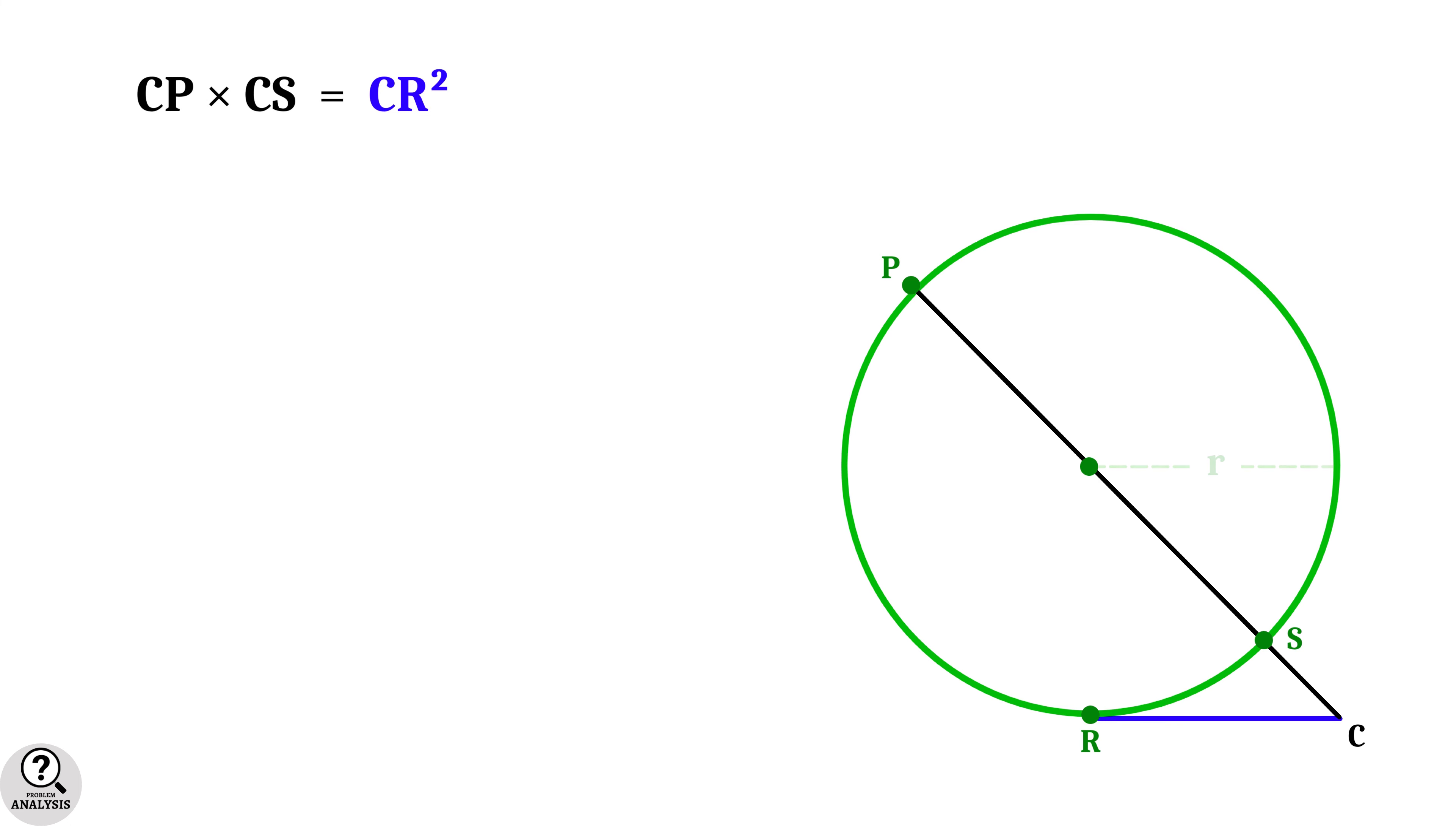Now suppose the radius of the circle is r. Then a clear observation shows that the tangent CR is equal to r. Now comparing with the quarter circle, what would be the length of CP? Clearly CP is a radius of this quarter circle. And it is same as the side length of the square, which is equal to 5 units. And hence CP equal to 5. Now apply the formula that gives 5 into CS equal to r square. That is CS is equal to r square by 5.